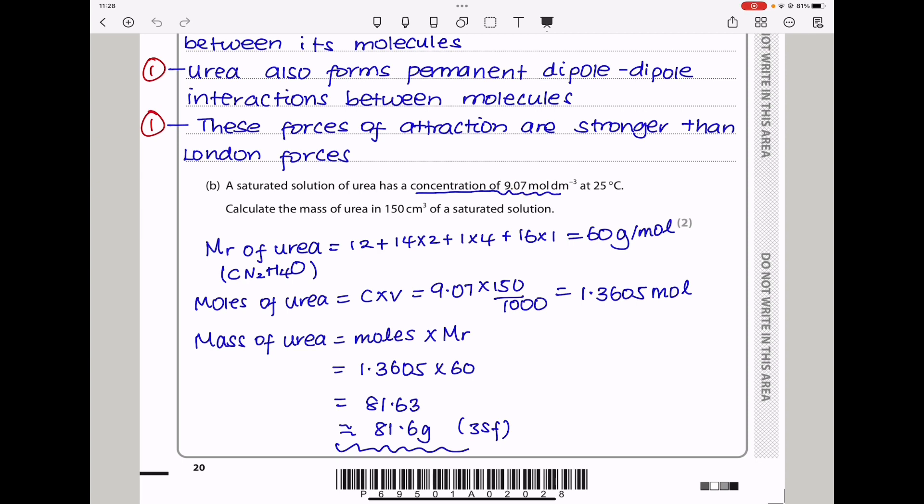Now the moles of urea should be concentration times volume, which is the concentration 9.07 times the volume. But I divided by 1000 to convert this volume into decimeters cubed. And I got this as the number of moles. That means the mass of urea should be the number of moles times the molecular mass, which gave me 81.63. And in the end, it's 81.6 grams to three significant figures.